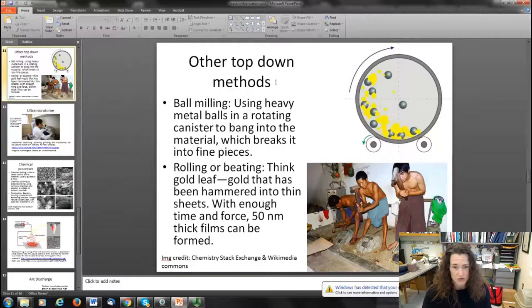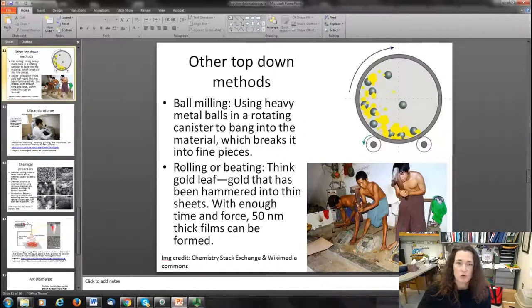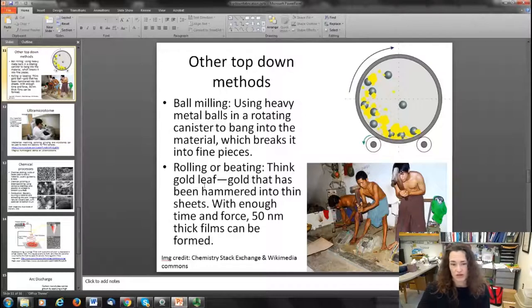If you're familiar with gold leaf, you could think of that. Gold that has been hammered into thin sheets could be as thin as 50 nanometers. Here's a picture of the old-fashioned way of making gold leaf. There are more modern techniques that use the same basic principles to create thin films as well.